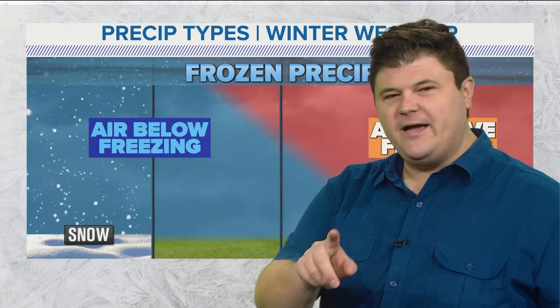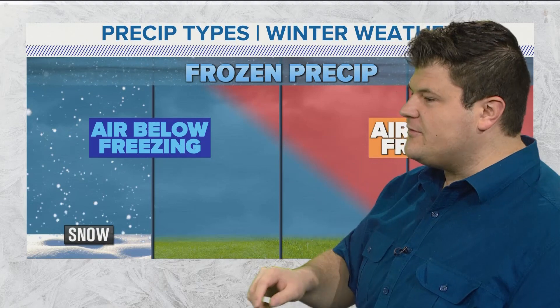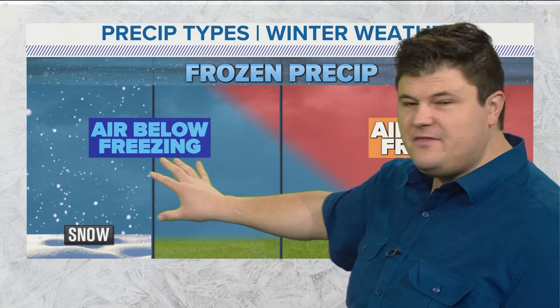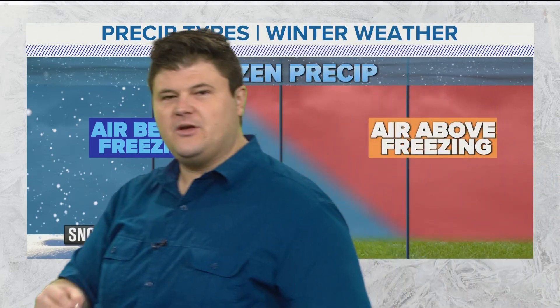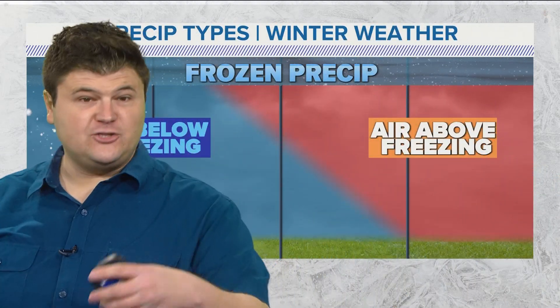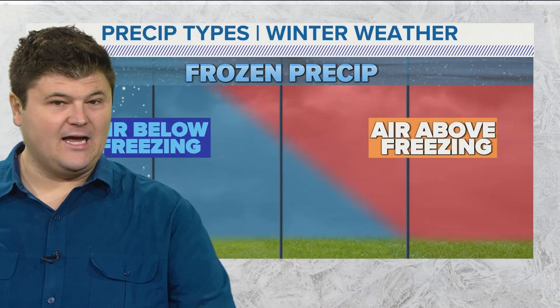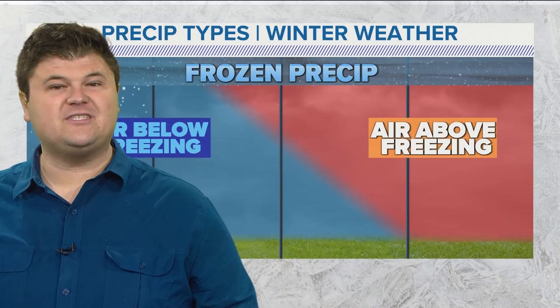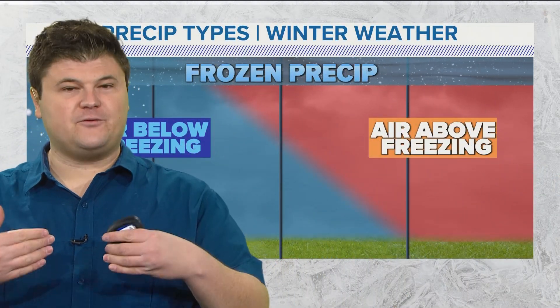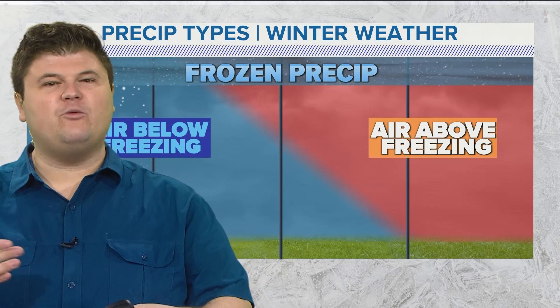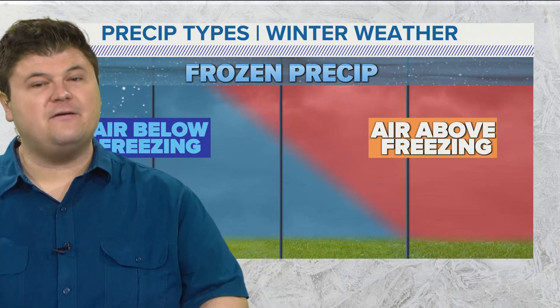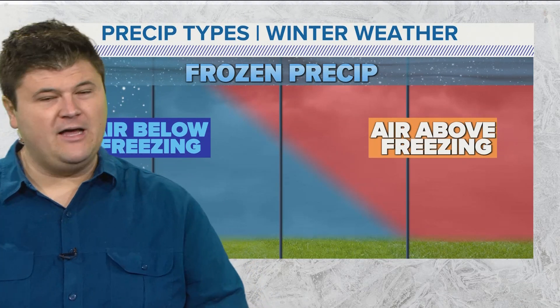Let's define a couple of things first. Anything shaded in blue right here is air at freezing or below freezing. Anything shaded in this red color that we have here is air above freezing — temperatures at which anything frozen would melt.